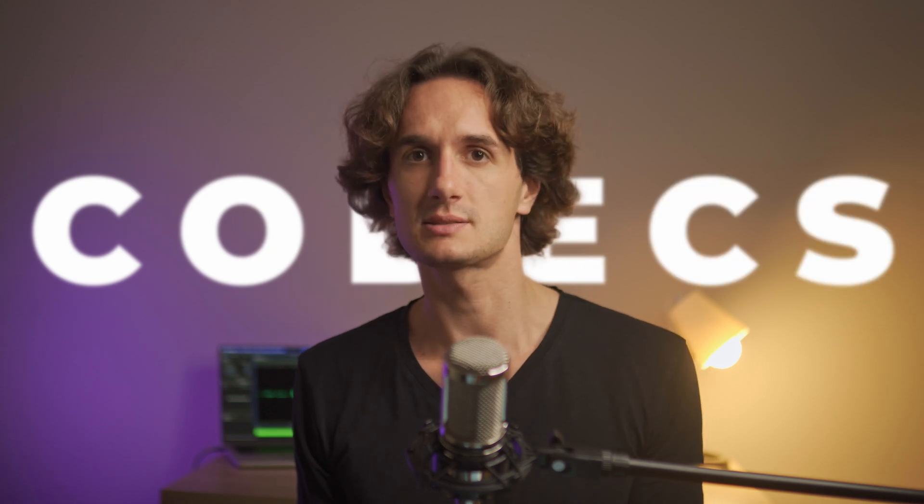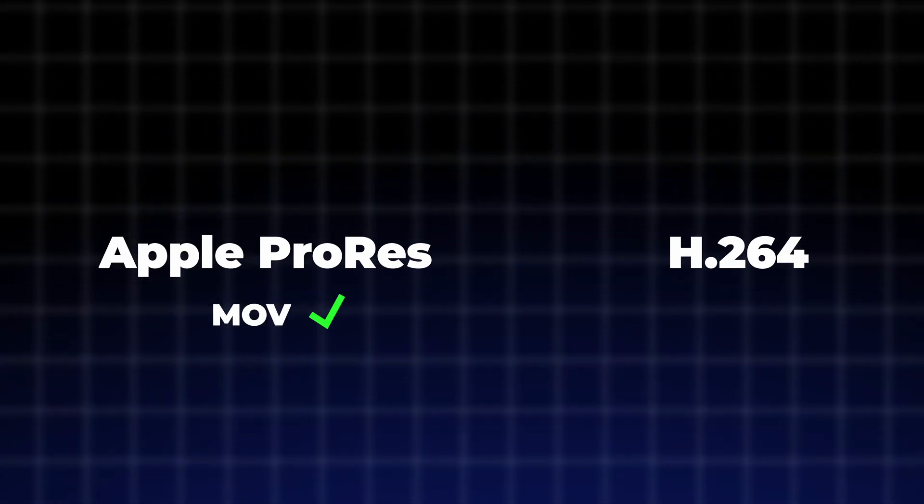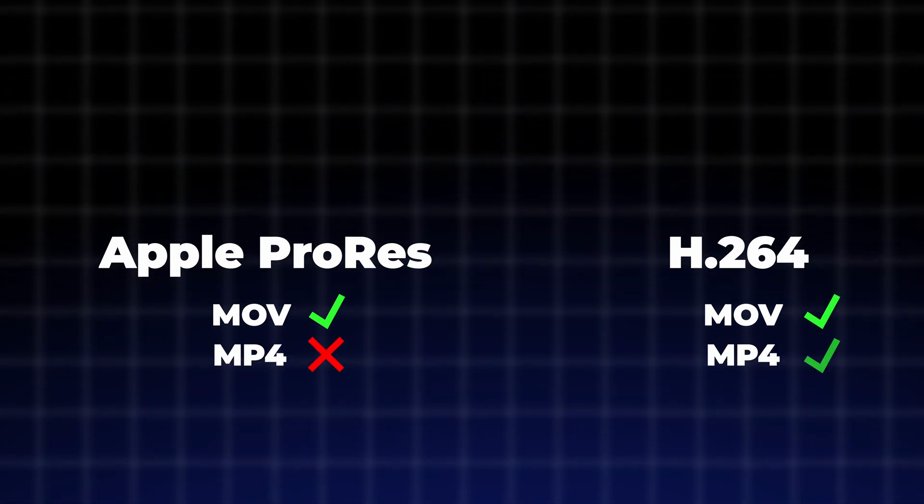Apple ProRes and H.264 are some of the most popular formats in their own way. Both are codecs, which means that they are the packaging of the video data, which then is labeled by format extensions such as .mov or .mp4. You can have ProRes MOV and also H.264 MOV, however you can't have ProRes MP4. So they are different.